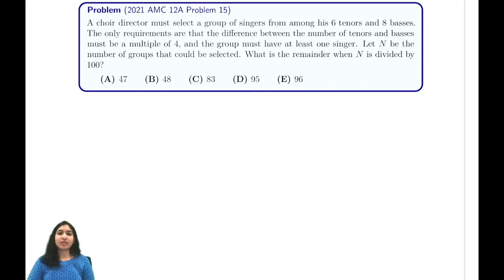Hi everyone, in today's video we're going to be going through 2021 AMC 12A Problem 15. In this problem we're told that a choir director must select a group of singers from among his six tenors and eight bases. The only requirements are that the difference between the number of tenors and bases must be a multiple of four, and the group must have at least one singer. Let N be the number of groups that could be selected. What is the remainder when N is divided by 100?